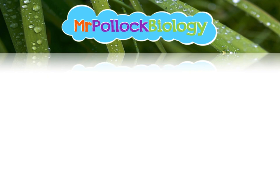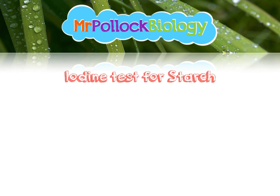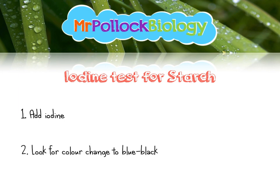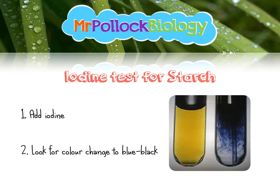The test for starch is nice and straightforward — it's the iodine test. All you're going to do is take your sample, add a small amount of iodine, and look for a colour change from orange to blue-black. Really straightforward, you'd have done this in your earlier school career. So look for that colour change to blue-black.